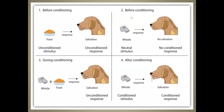In frame two, before the conditioning, Pavlov thought: if the dog is naturally salivating to food, what would happen if he used a neutral stimulus such as a whistle? He would blow the whistle and observe the dog's response, and there was no conditioned response — no salivation at all. Then in frame three, the conditioning phase, right before the dog was about to eat, he would blow the whistle and then serve the food while the dog was salivating. He continued to do this repeatedly.